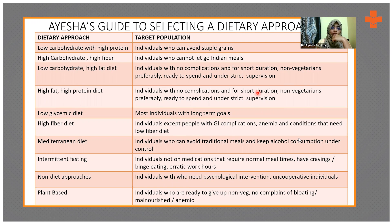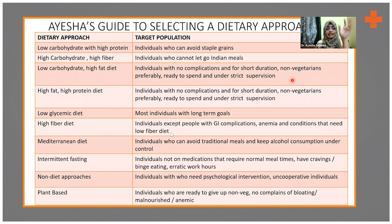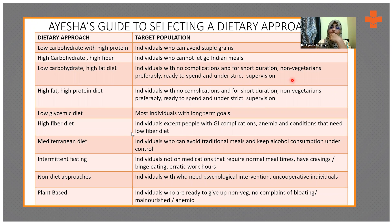A high fat, high protein diet is again for a short duration, with no complications, and preferably non-vegetarian. Low glycemic index is suitable for most individuals — especially those who are not very diet-conscious and those who are very diet-conscious. A high fiber diet is for normal individuals, but they shouldn't have any GI complications or anemia, because fiber can hinder iron absorption.